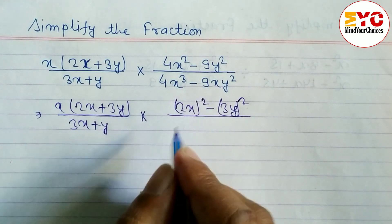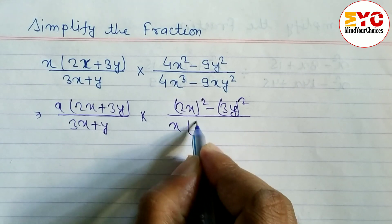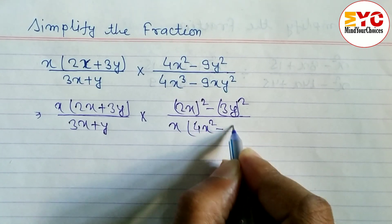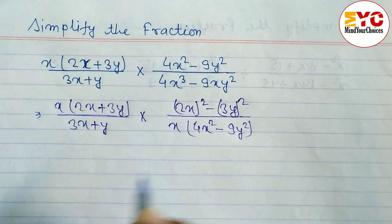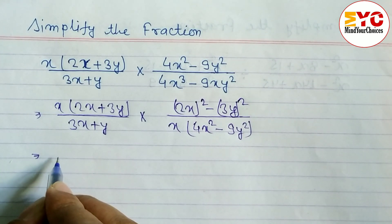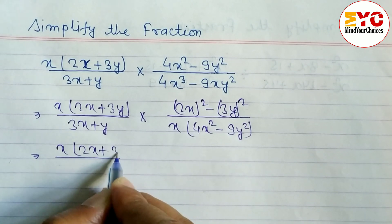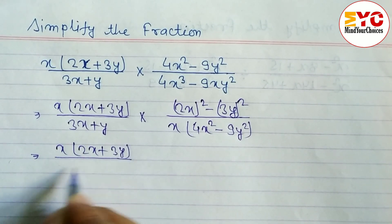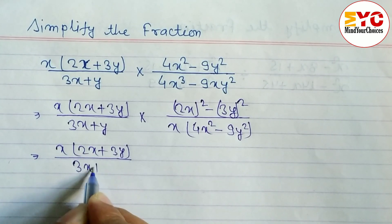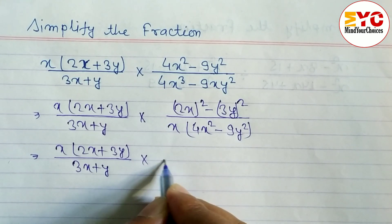Here is x cubed, here is x, so we can take x common and the remaining 4x squared minus 9y squared. And after this, 2x plus 3y by, we have to write on the same, 3x plus y.